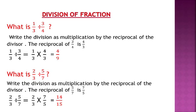Look at the examples. What is 1 over 3 divided by 3 over 4? Write the division as multiplication by the reciprocal of the divisor. The divisor is the second fraction, 3 over 4. The reciprocal of 3 over 4 is 4 over 3. So 1 over 3 divided by 3 over 4 gives 1 over 3 multiplied by 4 over 3. Multiply numerators: 1 times 4 is 4. Multiply denominators: 3 times 3 is 9. The answer is 4 over 9.